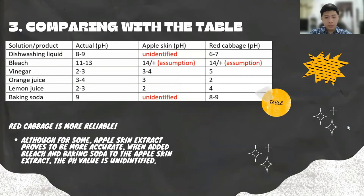From this table, I can conclude that red cabbage is a more reliable natural indicator, although for some solutions — like vinegar, orange juice, and lemon juice — the apple skin extract proves to be more accurate. But when bleach and baking soda are added to the apple skin extract, the pH value is unidentified.